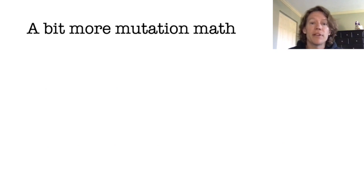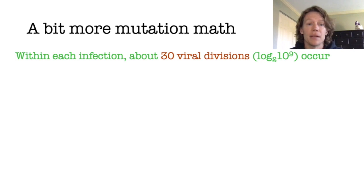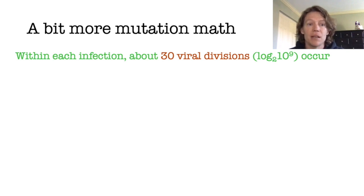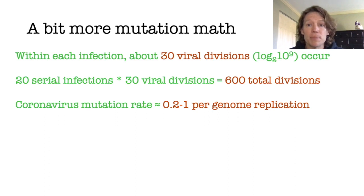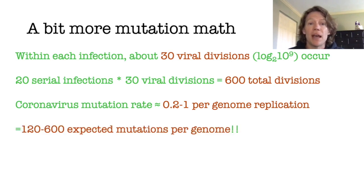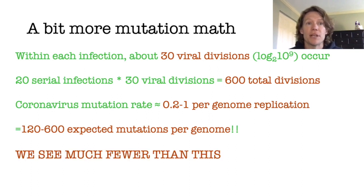However, that's not the whole story, because we want to figure out how many mutations might be happening. Although it's hard to know exactly, within each infection about 30 viral divisions occur to reach a population of about a billion viruses within each human who's infected. With this estimate, we multiply by the number 20 from the previous calculation, meaning each SARS-2 lineage has undergone about 600 total divisions. Coronaviruses have low per-base-pair mutation rates for RNA viruses, but their genomes are pretty large for RNA viruses. Based on estimates from the literature, we estimate a range of about 0.2 to 1 mutations per genome replication, producing an expected range of 120 to 600 mutations per genome. However, we see much fewer mutations than this.